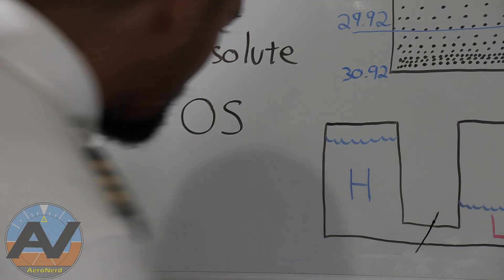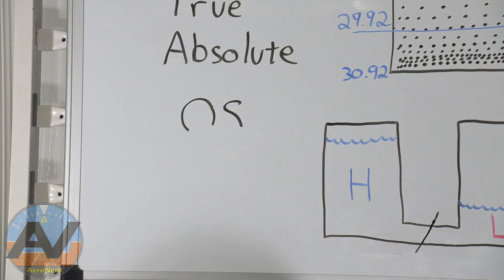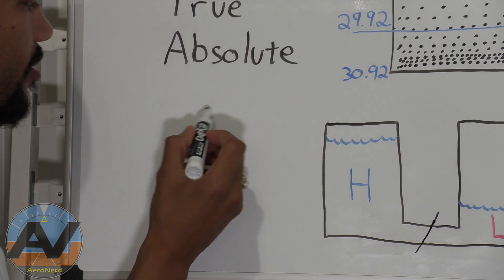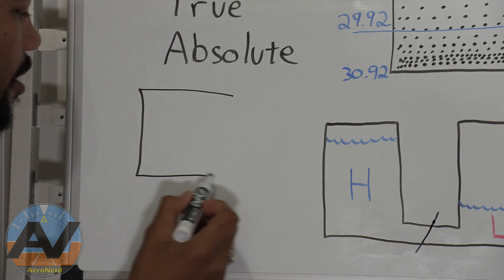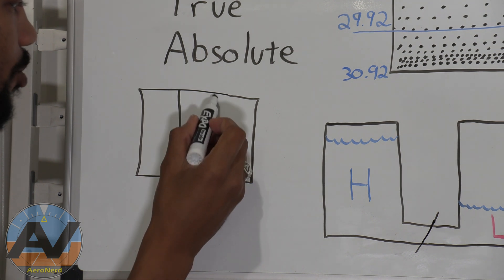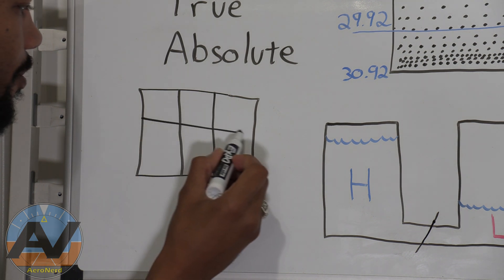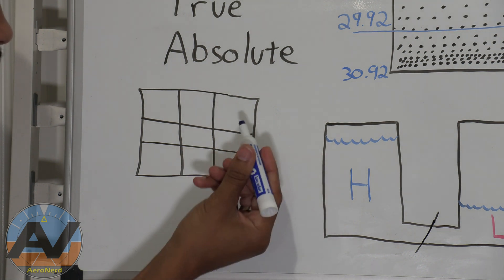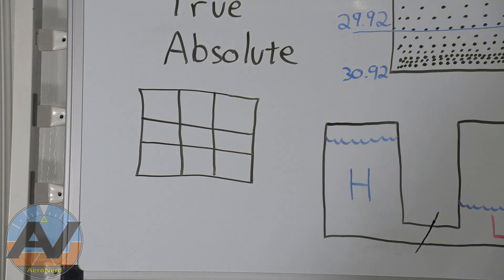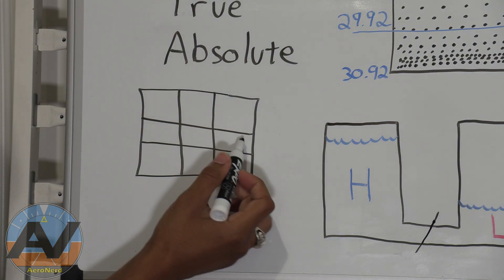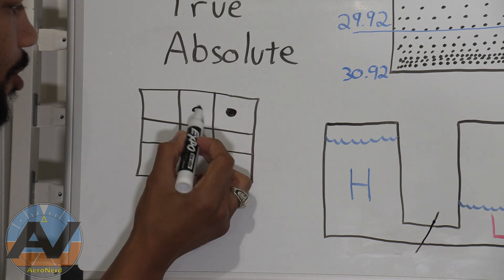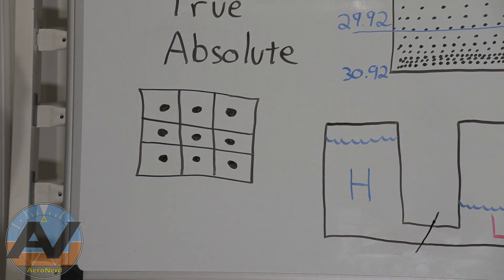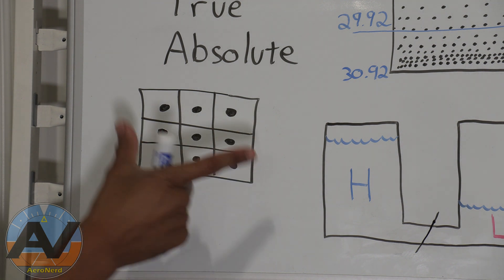One thing I want to mention: there's a lot of confusion about humidity and how it affects aircraft performance. Many students think that if the air is really humid, it's going to be more dense — but that's actually not the case. Let's say this column of air has nine air molecules per square inch at sea level — that's as dense as you can get.